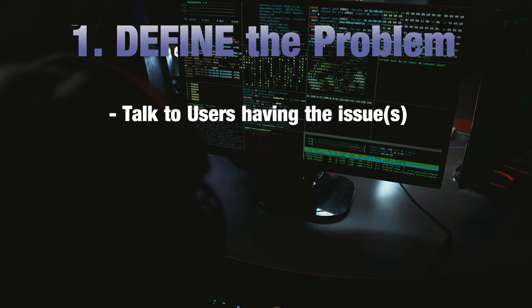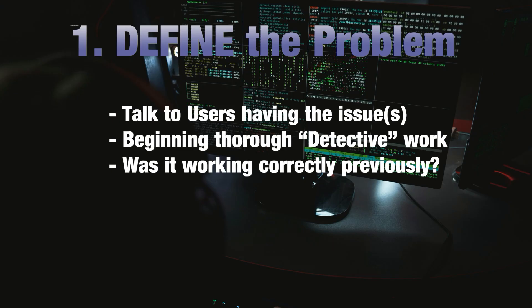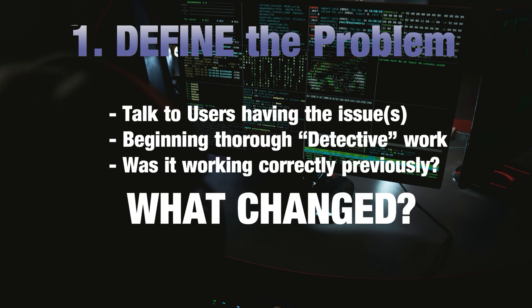This first step includes talking to users having connectivity or slowdown issues, or beginning a thorough but efficient bit of detective work, because you really need to be like a detective when troubleshooting network issues. The biggest question to ask at step one is: was it working correctly previously, and if so, what changed? Was there a power outage? Did someone connect or disconnect a cable? Did someone unplug something? Did a new configuration get uploaded and activated on a switch, router, or server? Once you've gathered as much data as possible on the issue and what might have changed, it's time to move on to step two.